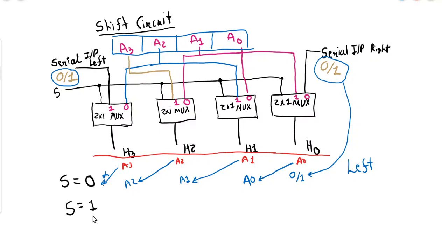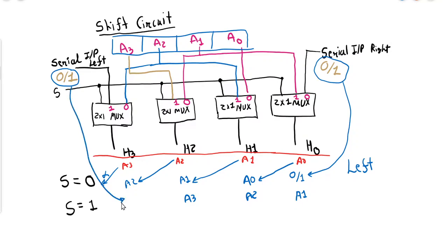When S equals one, all multiplexers select input number one. Input number one of the first multiplexer is A1, the next is A2, the next is A3, and the last multiplexer's input number one is the serial input from the left, which can be zero or one.